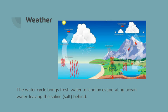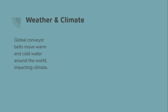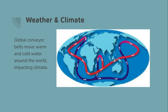Weather is the second big impact of the ocean on human life. We know about the water cycle, which brings fresh water to land by evaporating ocean water and leaving the saline, or salt, behind. We know that oceans influence prevailing winds because of the water's tendency to hold on to heat and slowly release it. We've also learned about global conveyor belts, which move warm and cold water around the world, which has a big impact on climate.